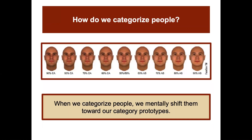How do we categorize people? In the textbook, there's a really interesting example using computer-simulated faces ranging from 90% Caucasian to 90% typically Asian. You can see changes in the way the faces look based on changes in different features. When we categorize people, we mentally shift them toward our category prototypes.